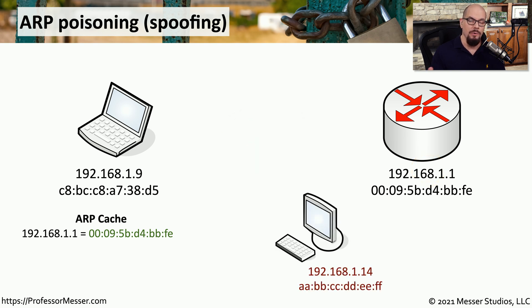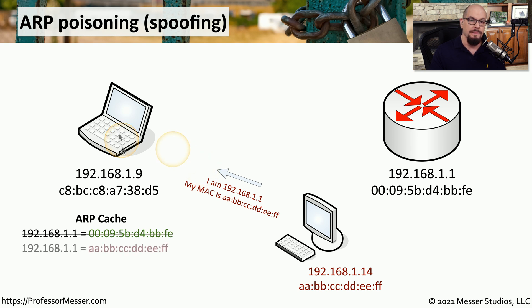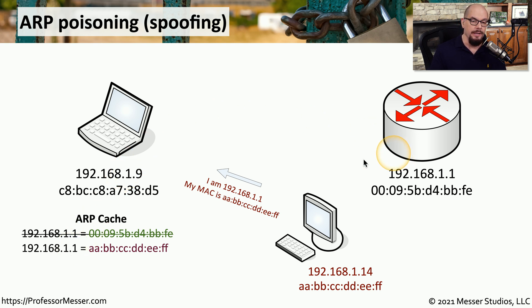For an on-path attack using ARP poisoning, the attacker must be on the local network. In this example, the attacker has IP address 192.168.1.14. To perform ARP poisoning, the attacker sends an unsolicited ARP response message to the victim device. Because ARP has no security, this unprompted message is accepted. The victim device receives it, updates its cache, and going forward, anything sent to 192.168.1.1 will be sent to the attacker's MAC address instead of the router. The poisoning on the victim computer is now complete.